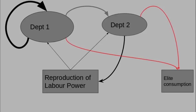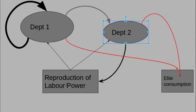We can put in the other departments in the directed graph. Department 1 uses up part of its own output but produces a surplus which flows into Department 2. Department 2 produces an output which goes into the reproduction of labour power, and the reproduction of labour power causes labour to go into Department 1 and Department 2. A portion of the physical surplus from Department 1 and Department 2 ends up going as elite consumption. In all of these flows, I'm talking about physical flows — flows of real goods between these departments.